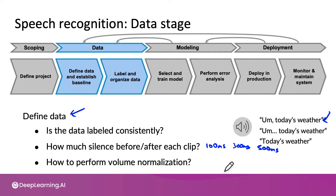A lot of machine learning research was driven by researchers working to improve performance on benchmark datasets — downloading a fixed dataset and working on that. This mindset has led to tremendous progress. But if you're working on a production system, you don't have to keep the dataset fixed. I often edit training sets or even test sets to improve data quality. What are practical, systematic frameworks — not ad hoc approaches — for ensuring high quality data? You'll learn more about this later in this course.